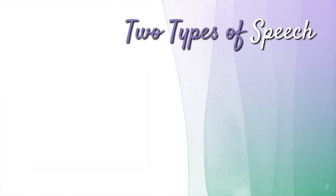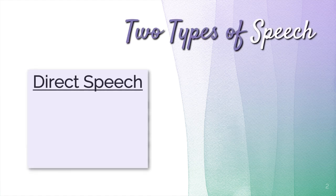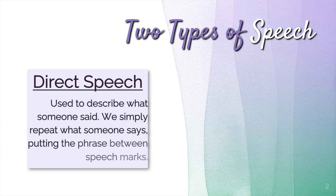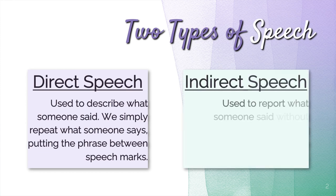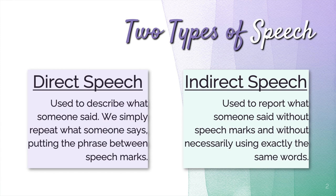There are two types of speech. The first one is called direct speech, and it is used to describe what someone said. We simply repeat what someone says, putting the phrase between speech marks. Indirect speech is used to report what someone said without speech marks, and without necessarily using exactly the same words.